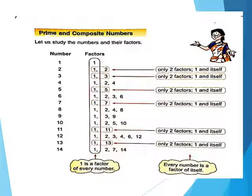Now if you look here, some numbers have only 2 factors, while some numbers have 3, 4, or sometimes 5 or 6 — meaning greater than 2 factors. The numbers which have only 2 factors — that is 1 and the number itself — those are the prime numbers.